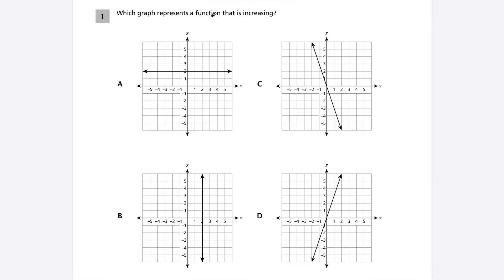Question 1: we want to know which graph represents a function that is increasing. If I'm looking for an increasing function, I want a function that goes up — something going up as we move from left to right. This first one is neither increasing nor decreasing, so it's out. Choice B does not represent a function because it fails the vertical line test — a vertical line hits it at infinite locations. So we cross out choice B.